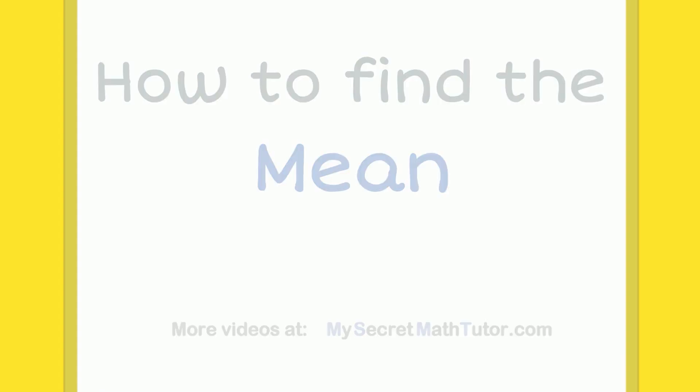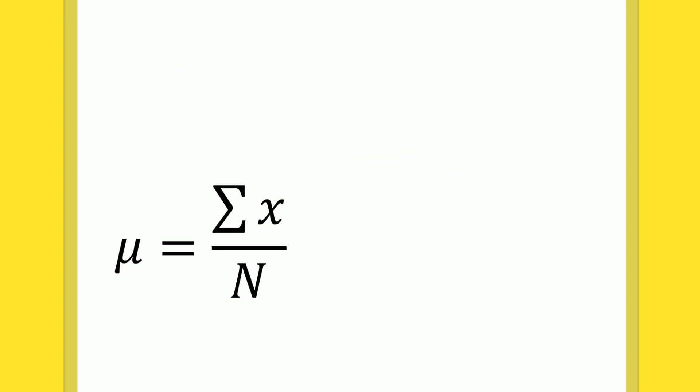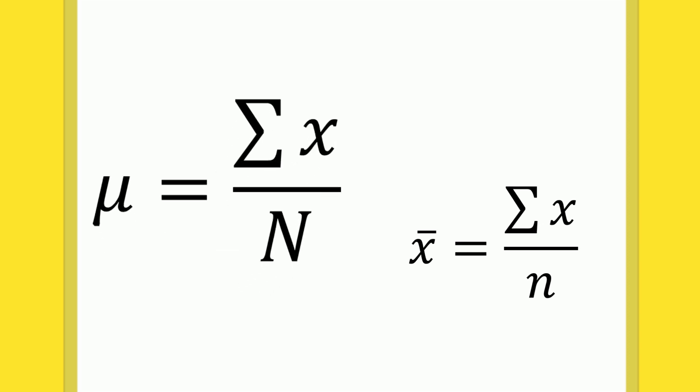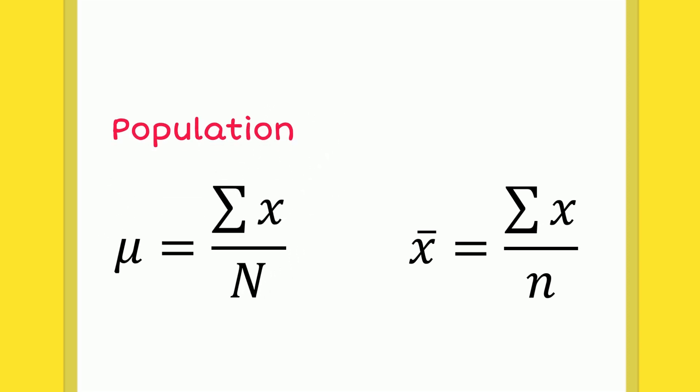How to find the mean. There are two formulas to find the mean for a set of data. The formula on the left is used to find the mean of a population, whereas the formula on the right is used to find the mean of a sample.